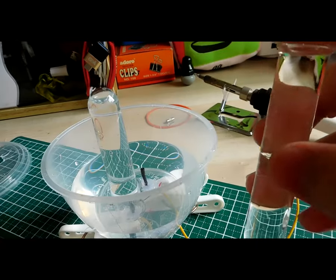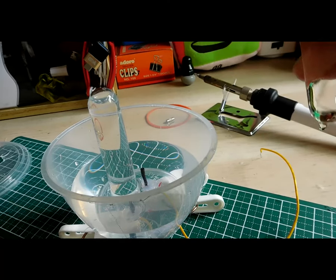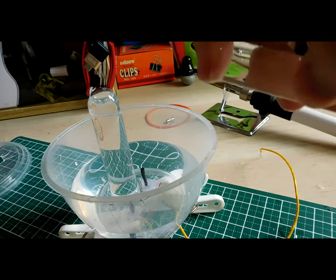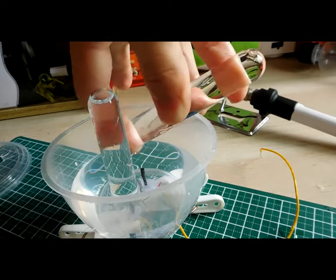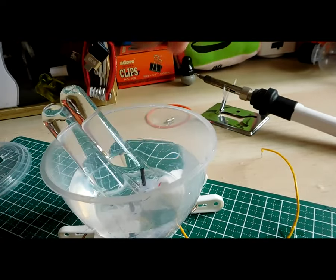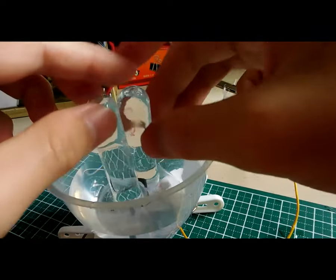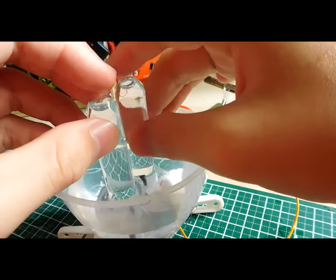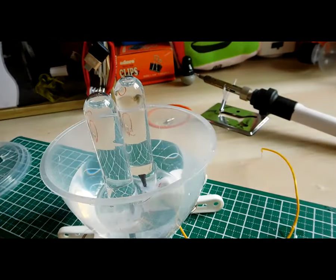What you have to do is cover the mouth of the test tube with your index finger, invert the test tube, and place it inside the water with the mouth fully submerged before you let go of your index finger. Once that's done, you can see that the water is trapped in the test tube.